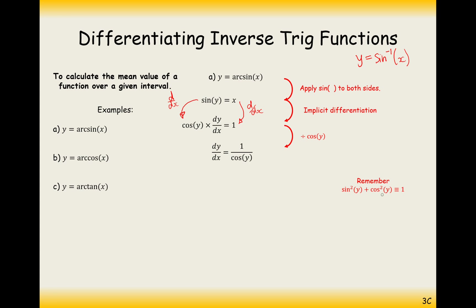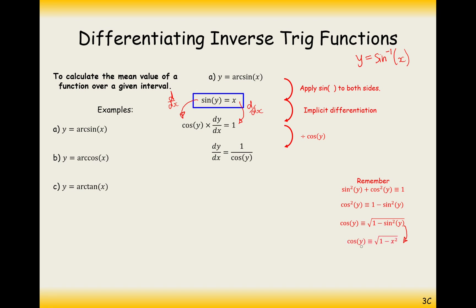Using the identity sine² y + cos² y = 1, I rearrange to get cos y = √(1 − sin² y). This is helpful because I want to get rid of cos y, and I know that sine y = x from the second line. So I replace sine y with x, giving cos y = √(1 − x²).